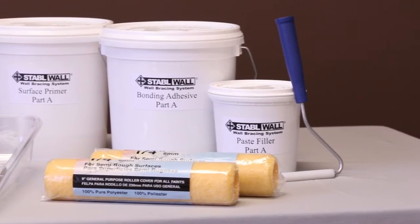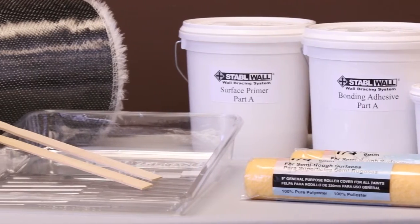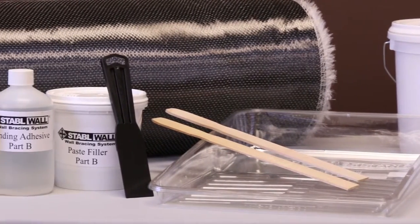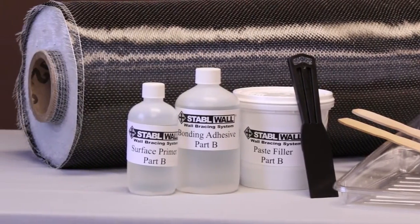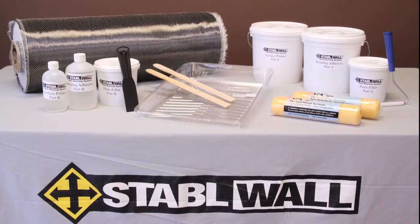These are the components of the StableWall reinforcement system. The kit includes nearly everything you'll need to install it. You'll need a few items you may have around the house, such as a drop cloth, a pair of rubber gloves, some stirring sticks, and a drill with a wire wheel if you have to remove paint. You'll also need a paint roller pan and a standard 9-inch roller frame.